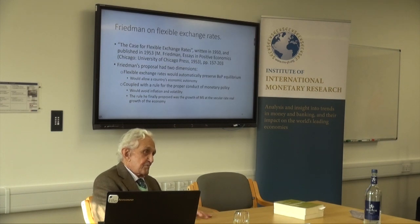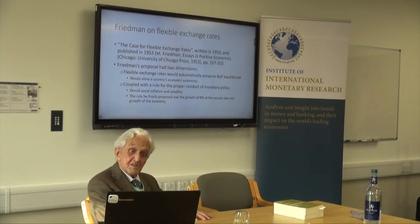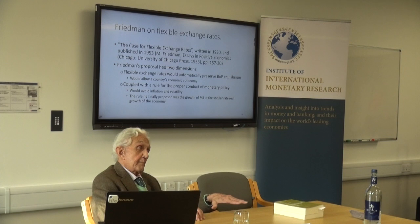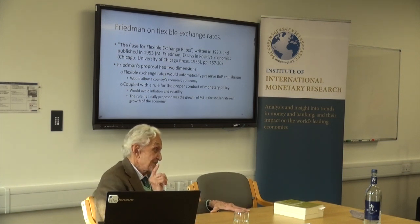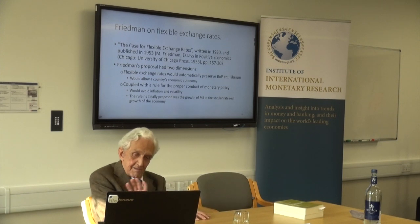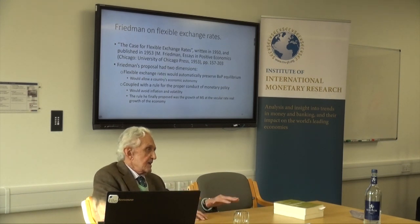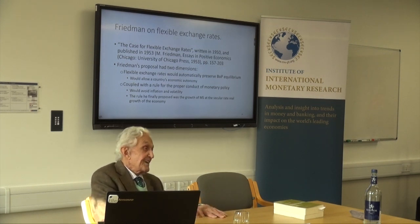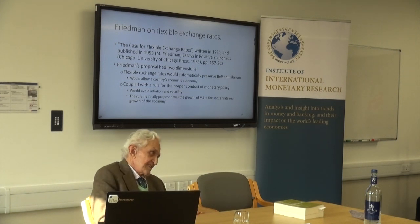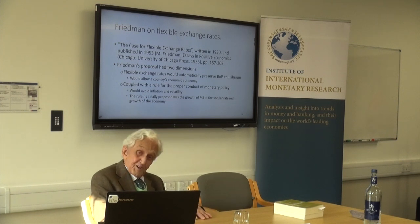At Bretton Woods, Keynes faced a very peculiar gentleman - Harry Dexter White, who is now known to have supplied information to the Soviet Union. He wasn't a spy for money - never charged - but exchanged information because he hated empire. Harry Dexter White and many Americans thought the British Empire that Churchill defended so strongly had to disappear. So White insisted on the pre-eminence of the dollar against these new-fangled ideas that Keynes was proposing. We thus entered not the gold exchange standard, but the dollar standard.